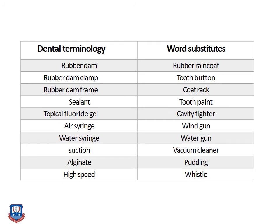Some word substitutes for dental terminology include: rubber dam = 'rubber raincoat'; rubber dam clamp = 'tooth button'; rubber dam frame = 'coat rack'; sealant = 'tooth paint'; topical fluoride gel = 'cavity fighter'; air syringe = 'wind gun'; water syringe = 'water gun'; suction = 'vacuum cleaner'; alginate = 'pudding'; high speed handpiece = 'whistle'.